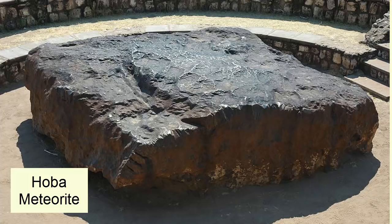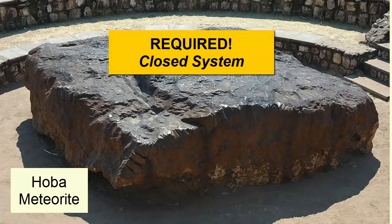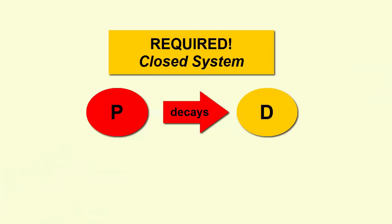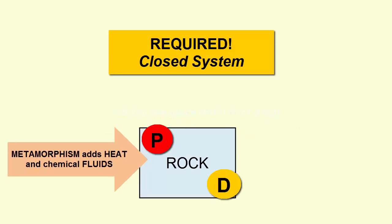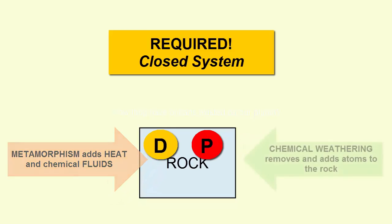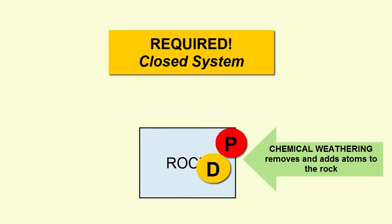Second step: we need to ensure the rock, shell, or bone fragment has remained a closed system. While parent decays into daughter, there must be no migration of parent or daughter isotopes into or out of the rock. Otherwise, the ratios we see do not reflect decay over the lifetime of the rock. For example, if a rock has undergone extensive metamorphism at high heats, atoms become mobile within the rock and can migrate in and out. Similarly, if a rock undergoes chemical weathering on its surface, minerals can break down and atoms can migrate in and out.